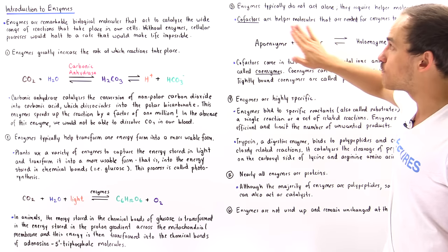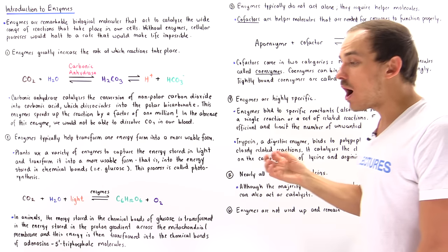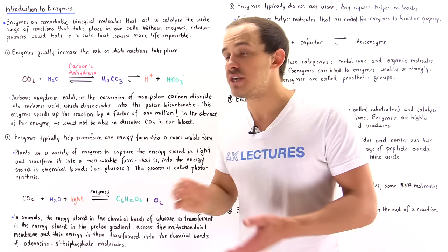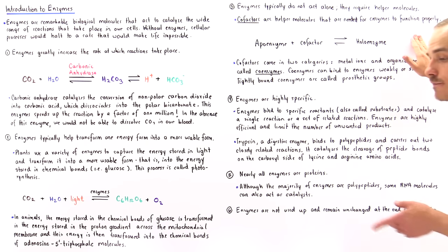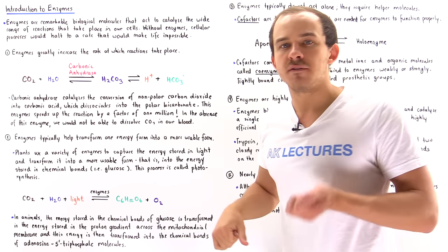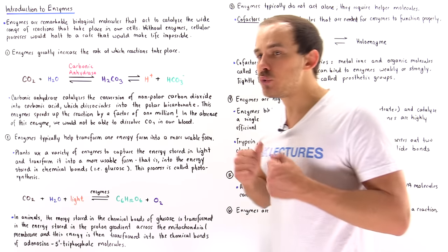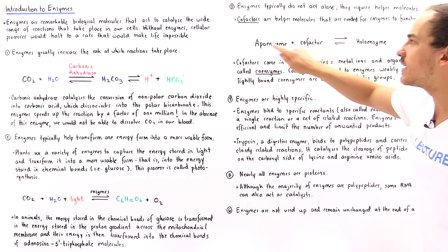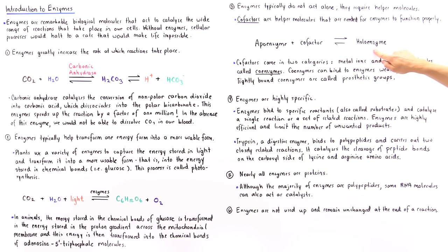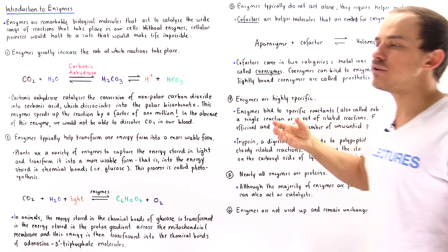Number three, enzymes typically do not act alone and they require additional molecules, and these molecules are known as cofactors. So cofactors are helper molecules that are needed for the enzymes to actually function effectively and efficiently. So when an enzyme is not bound to its cofactor we call the enzyme an apoenzyme, but when the cofactor is bound to the apoenzyme we call that a holoenzyme.